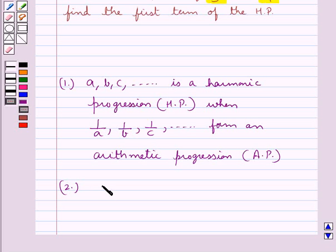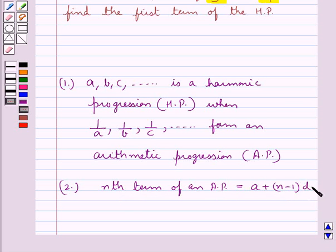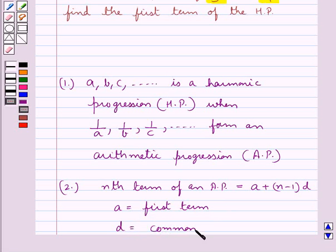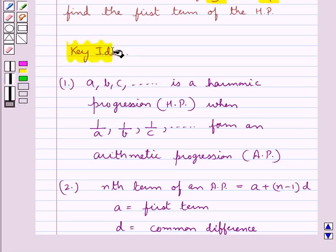Also, we know that the Nth term of an AP is given by A plus N minus 1, the whole into D, where A is the first term of the AP and D is the common difference. This is the key idea that we use in this question.